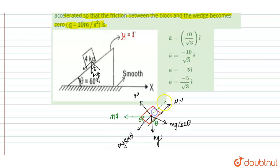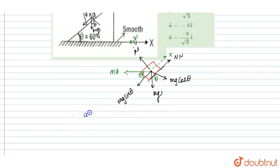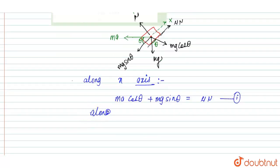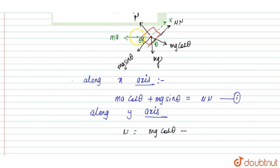Let us consider the x-axis along the incline and the y-axis perpendicular to it. Balancing forces along the x-axis gives: M·A·cos(theta) plus Mg·sin(theta) equals mu times N. This is equation number 1.